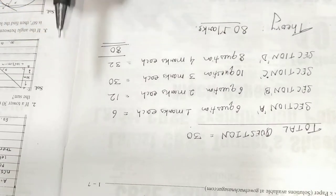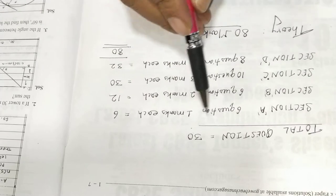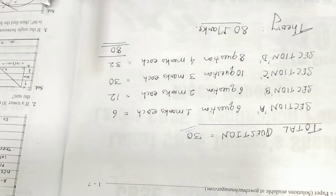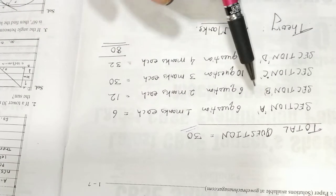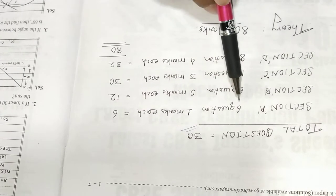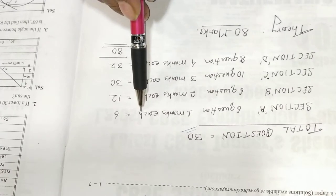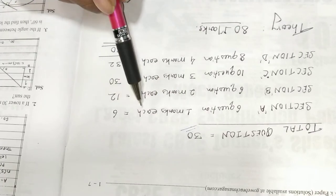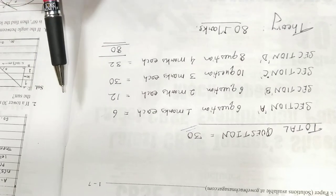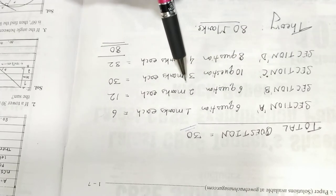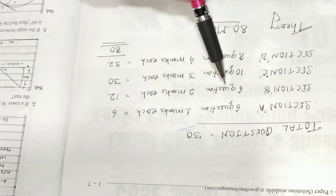In Class 10 board examination for mathematics subject you will be having total 30 questions. In section A there will be 6 questions of one mark each, so that is 6 marks. In section B also there will be 6 questions but of two marks each, so 6 questions into 2 marks equals 12 marks for section B.